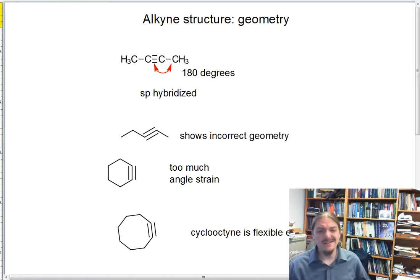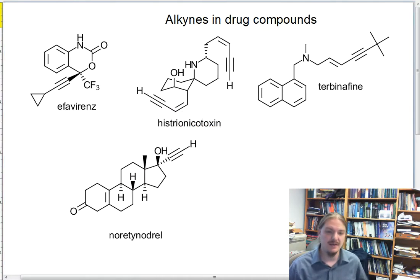The alkyne is not nearly as commonly occurring a functional group in naturally occurring compounds as alkenes and alkanes, but there are some drugs and drug-like compounds that contain alkynes in their structure.